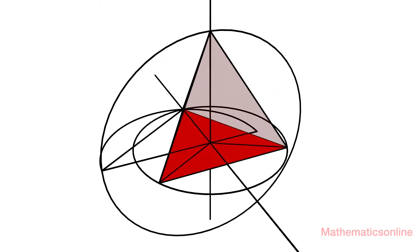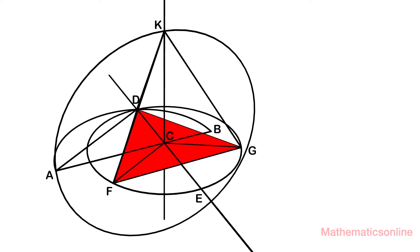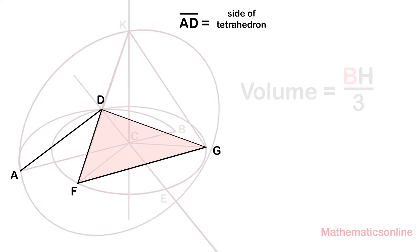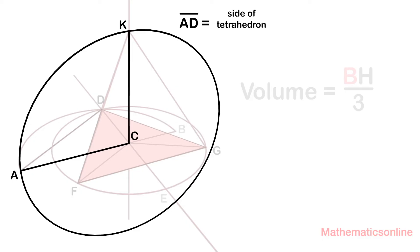Now in this video we are going to derive the volume of the tetrahedron. We know that the volume of a pyramid is area of the base times height divided by 3. From our construction, AD represents the side of the tetrahedron and AC represents the height.